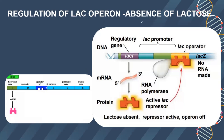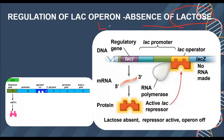We'll take two scenarios. The first scenario is when there is no lactose in the cell. E. coli cells are present but there is no lactose — let's say some other sugar is there. When lactose is absent, E. coli is utilizing glucose, so the E. coli cells will make enzymes for glucose metabolism. The genes for lactose utilization will not be required.